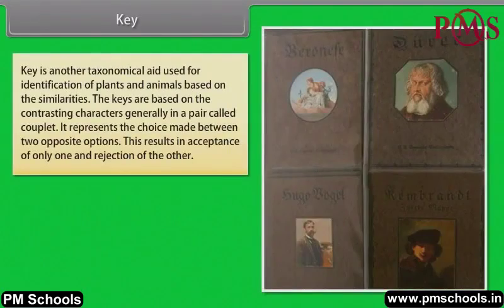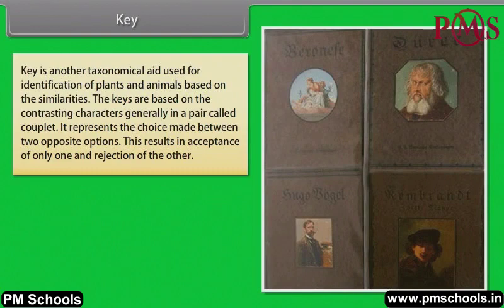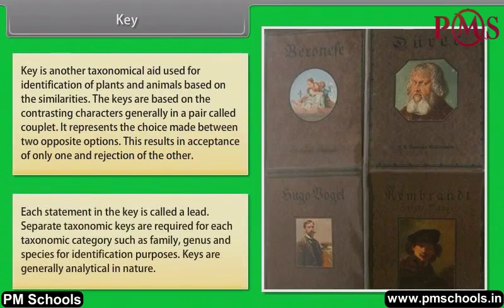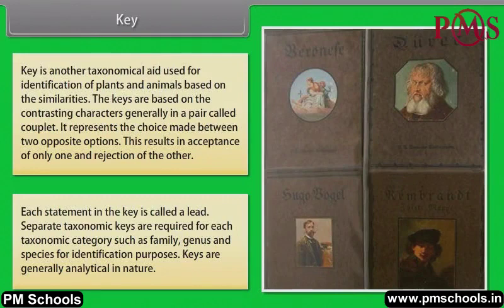A key is another taxonomical aid used for identification of plants and animals based on similarities. Keys are based on contrasting characters generally in pairs called couplets. It represents the choice made between two opposite options, resulting in acceptance of only one and rejection of the other. Each statement in the key is called a lead. Separate taxonomic keys are required for each taxonomic category such as family, genus and species for identification purposes. Keys are generally analytical in nature.